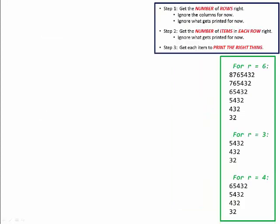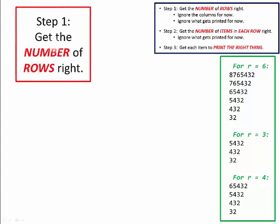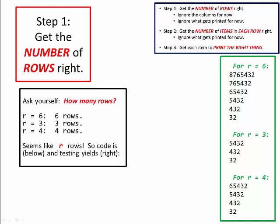We're back to three steps. Let's start with step one, where we try to get the number of rows right. We ask ourselves, how many rows? Looking at the problem, we see when r is 6 we have 6 rows, when r is 3 we have 3 rows, when r is 4 we have 4 rows. It looks like we have r rows.